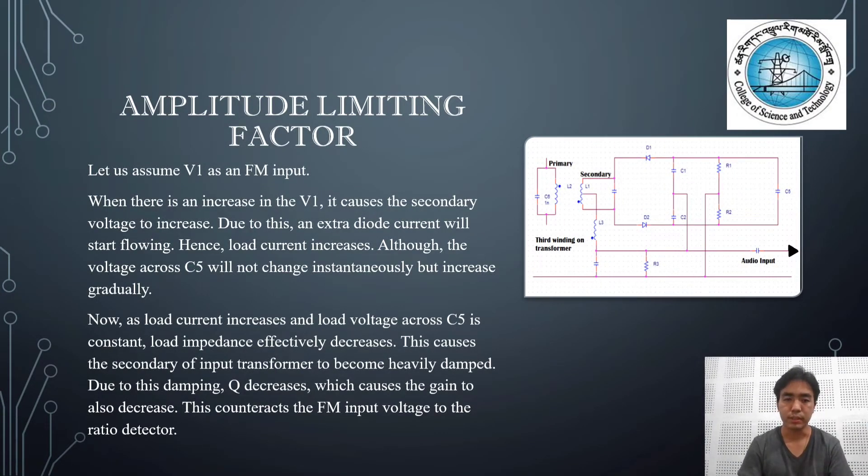Amplitude limiting factor. Now let us assume that V1 is an FM input. When there is an increase in V1, it causes the secondary voltage to increase. Because of this, the extra diode current will start flowing, and then the load current increases. Although the voltage across C5 will not change instantaneously, it will increase gradually.